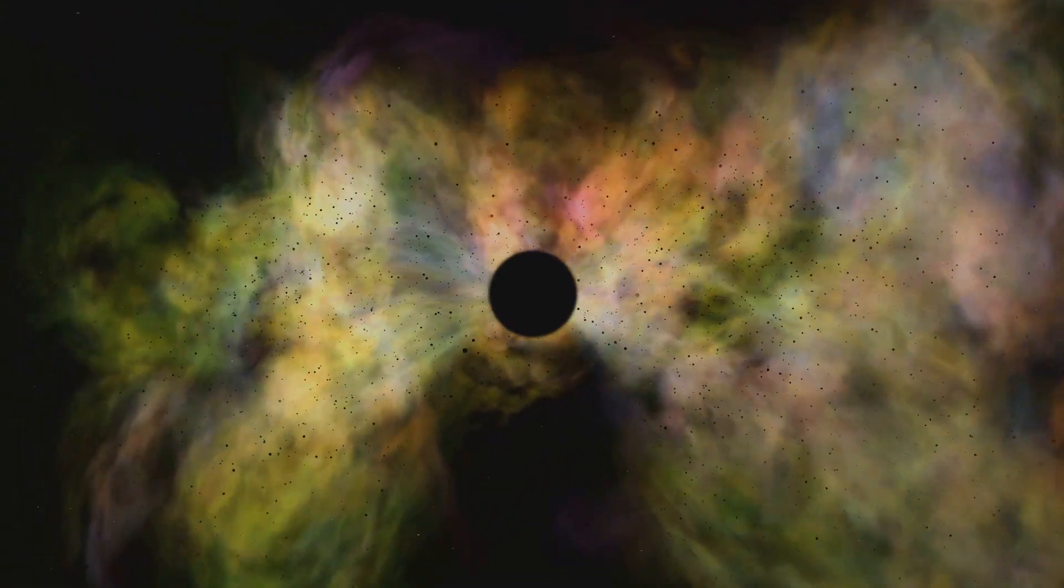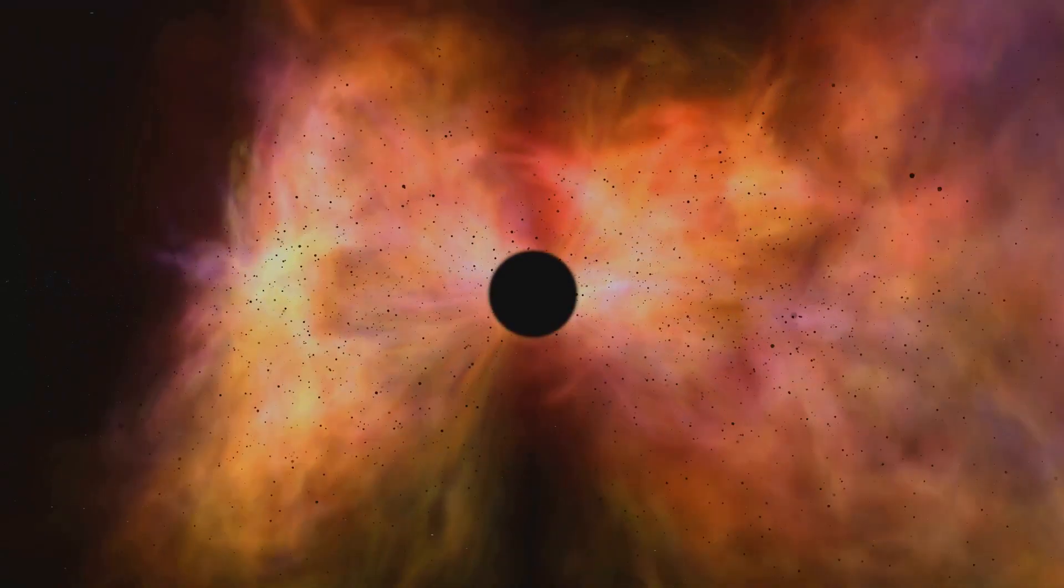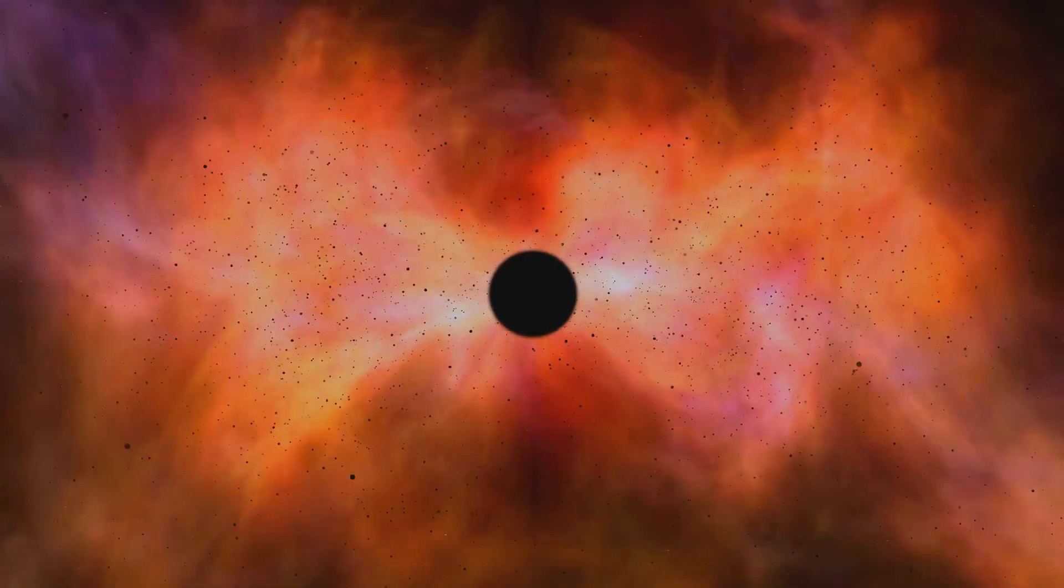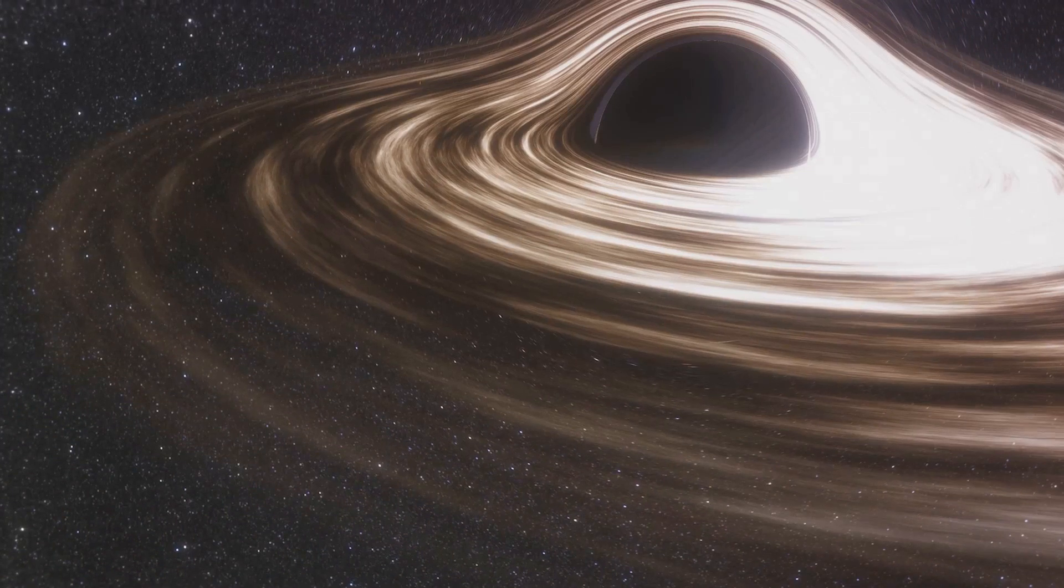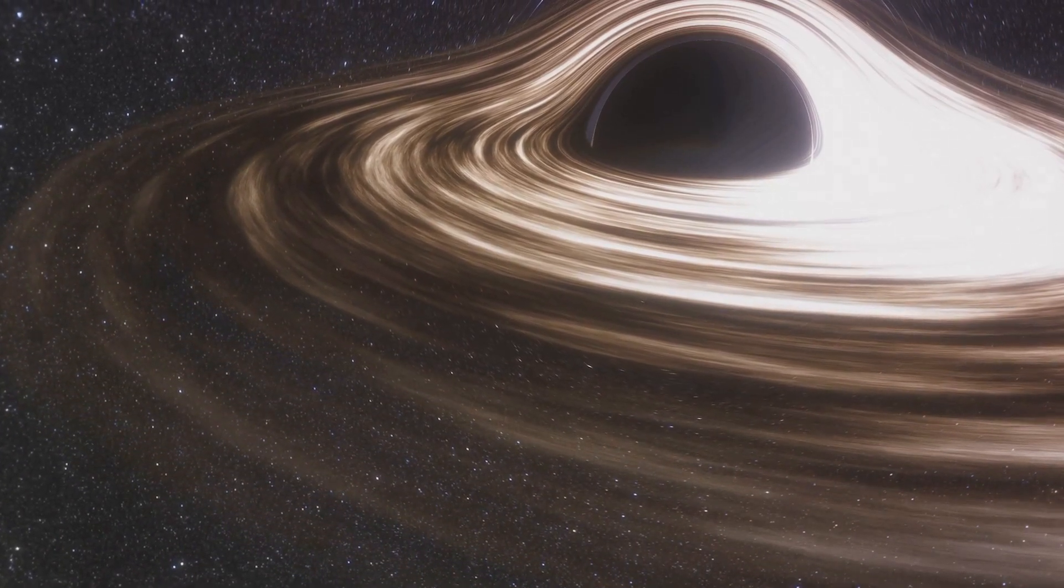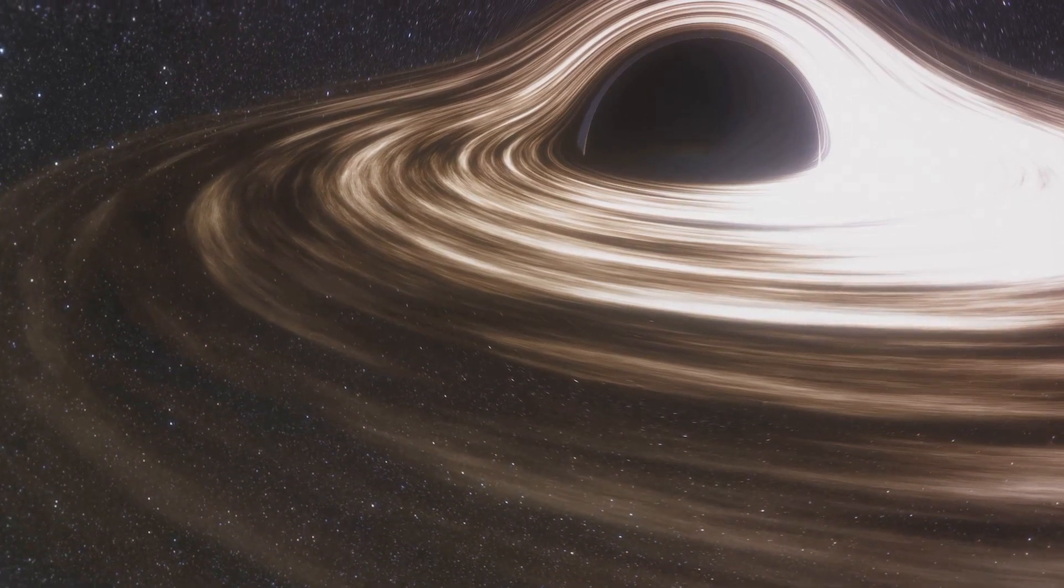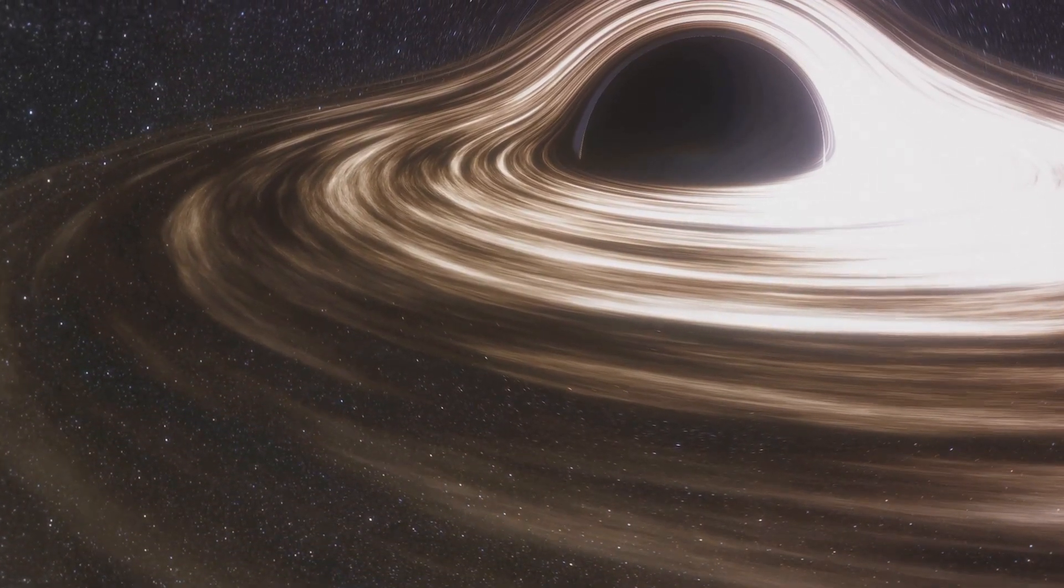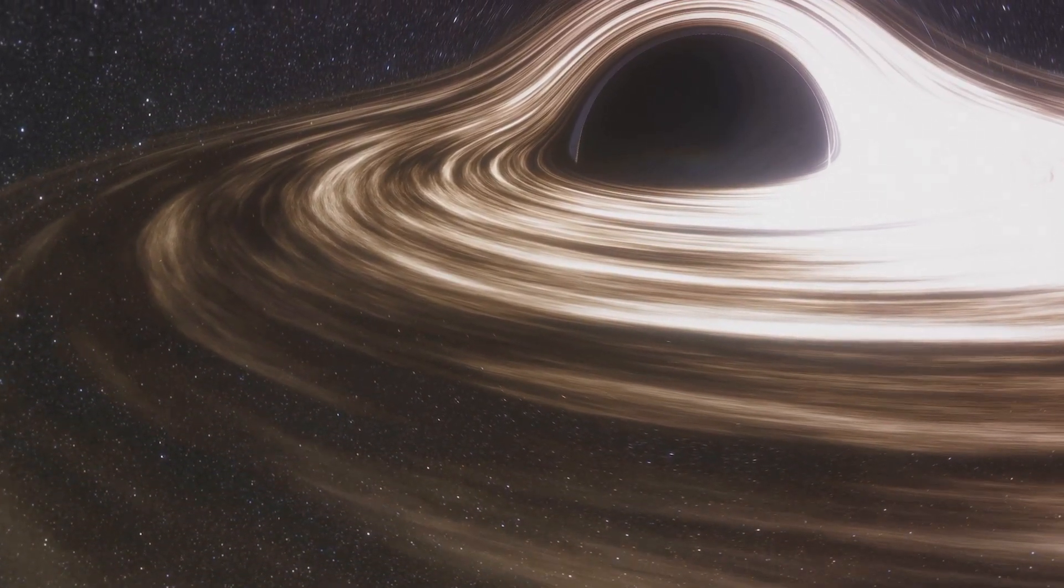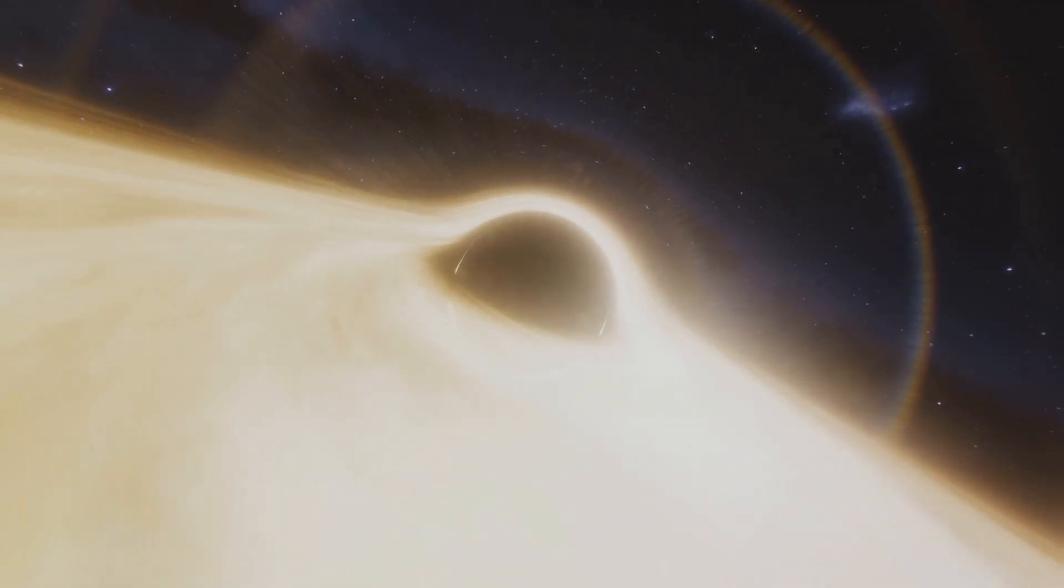The galactic center is a bustling hub of activity, teeming with stars whirling around in various orbits. This stellar dance is not random, though. It's the gravitational pull of Sagittarius A asterisk that sets the rhythm and pace. The black hole's immense gravity tugs at everything around it, causing stars and gas clouds to move in dizzying orbits.